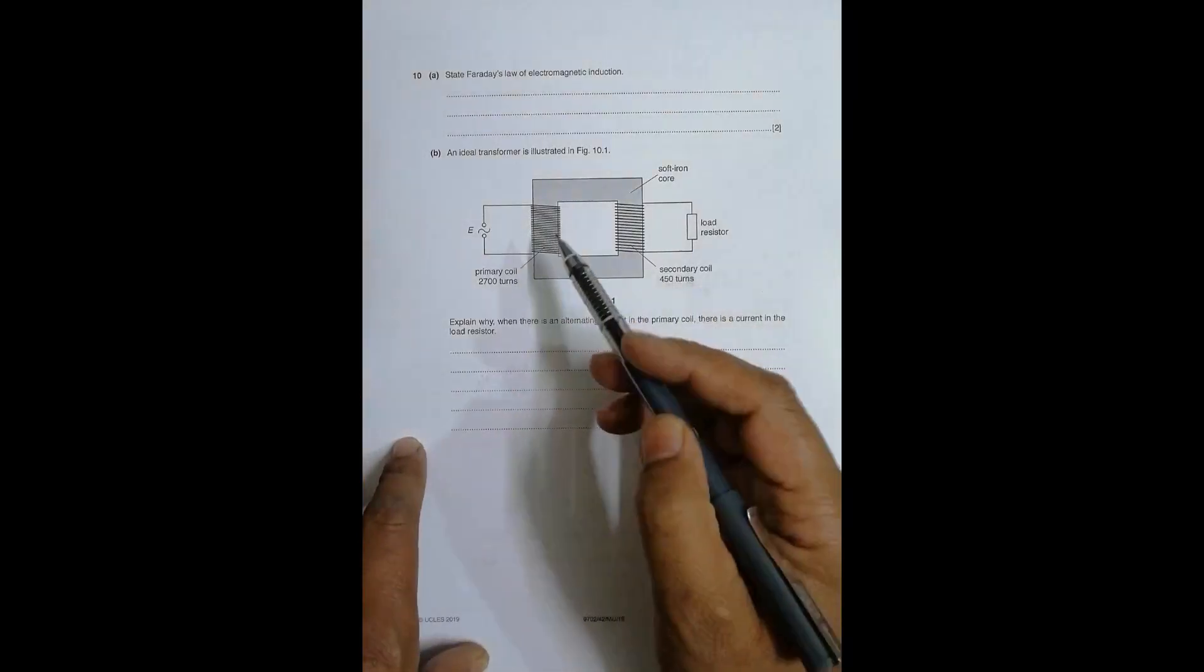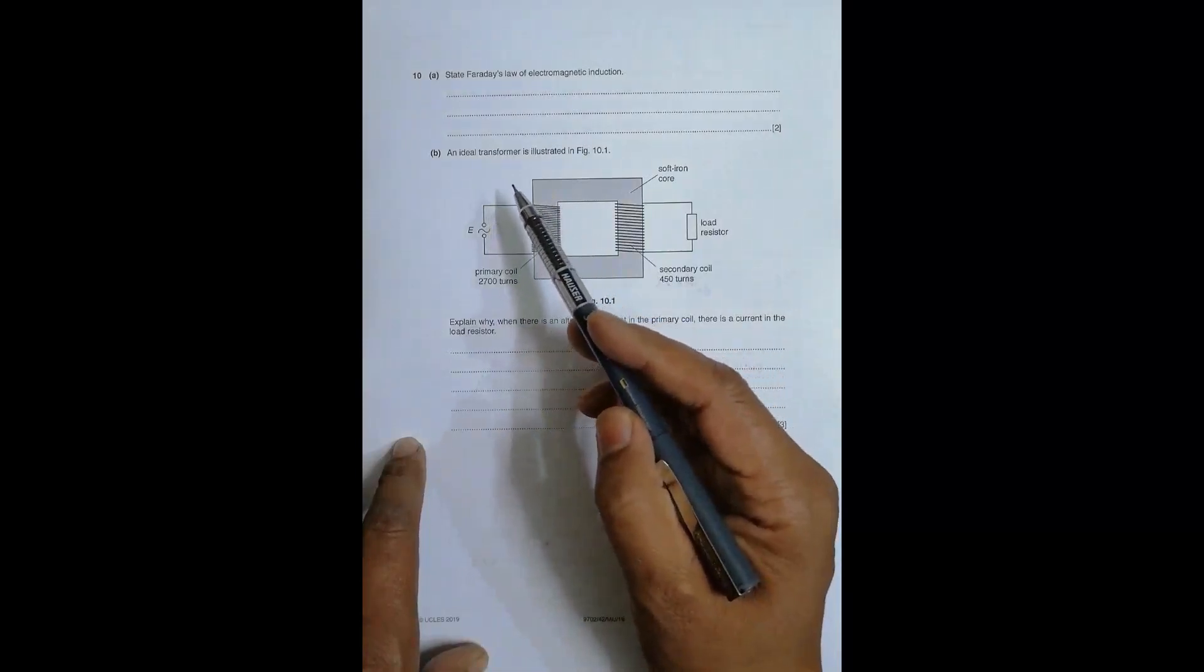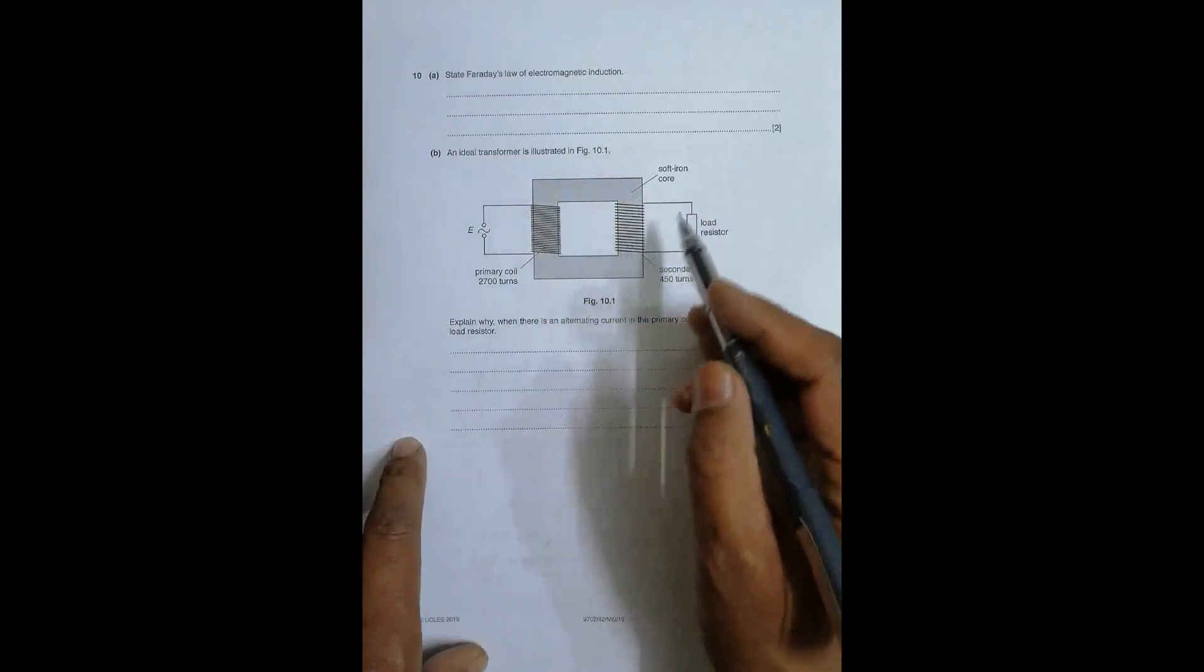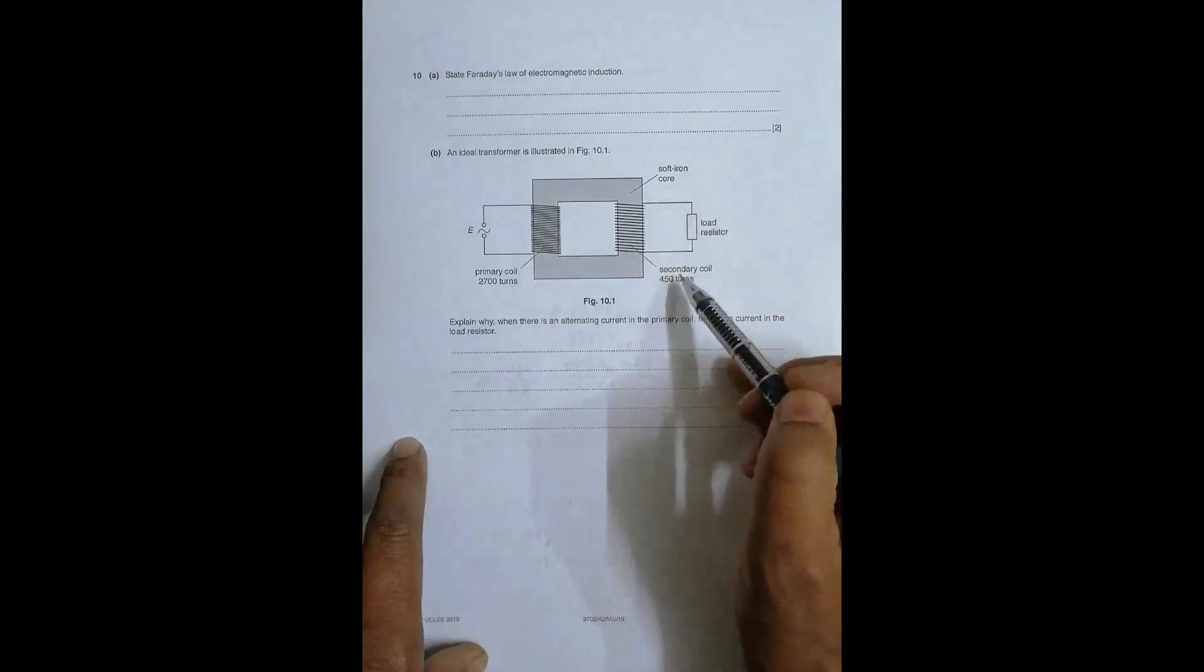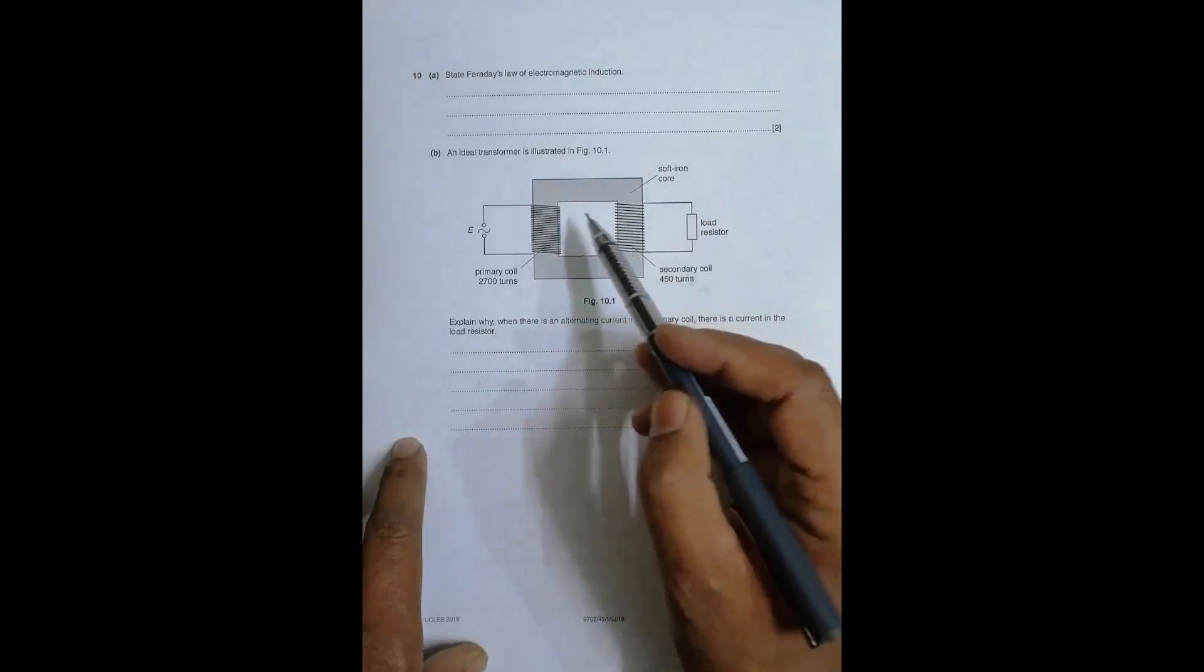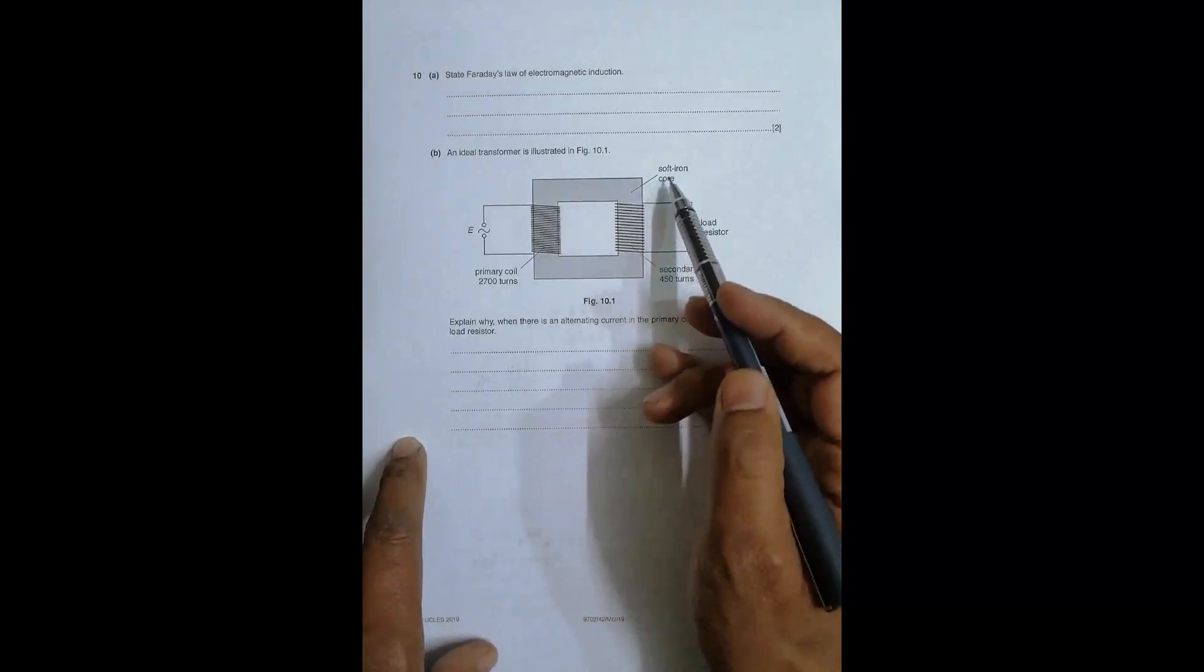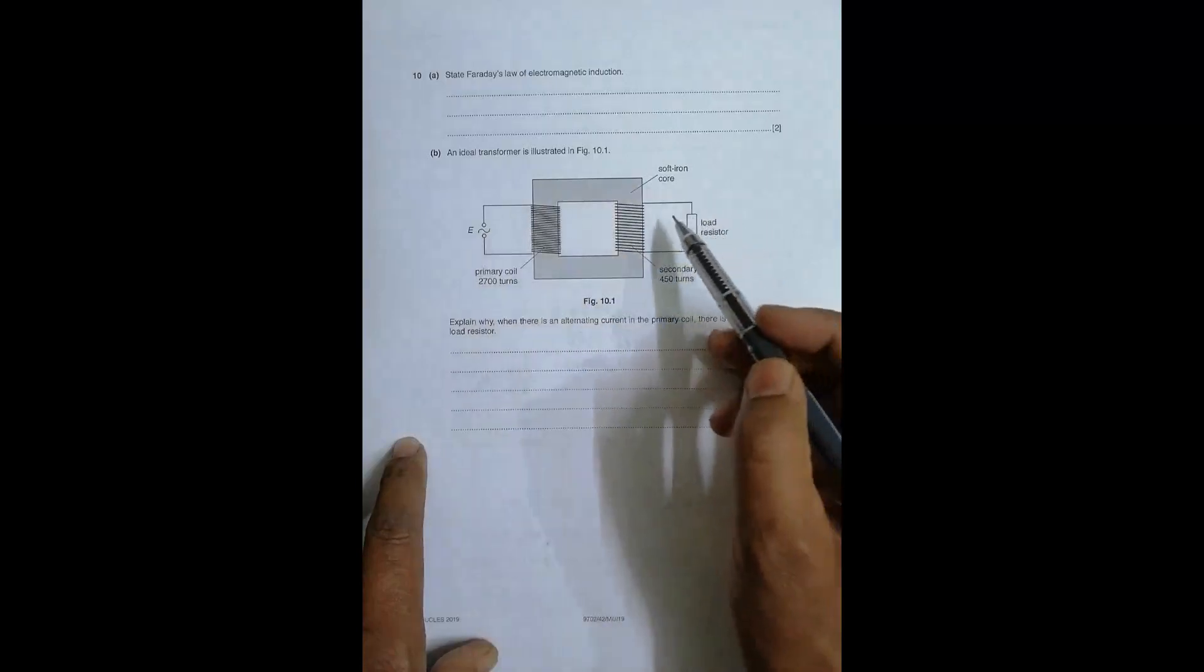I'll go directly to the second question. It says an ideal transformer is illustrated in the figure. This is the transformer - it has a primary coil, a secondary coil, and those two coils are wound around a soft iron core.